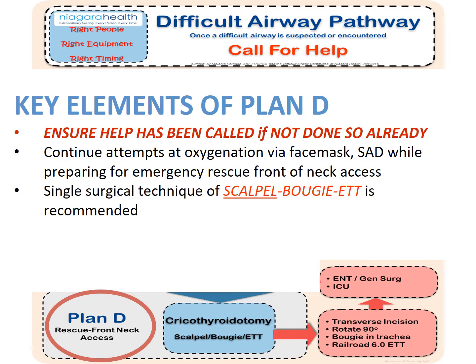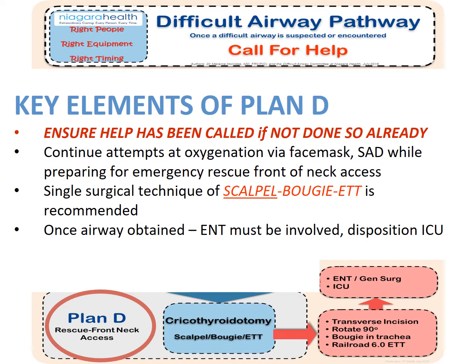We are going to use a scalpel, bougie, and endotracheal tube. Once we have that endotracheal tube in place, we're going to get ENT involved because they're going to need to follow this patient with respect to converting over to a traditional tracheostomy tube, and of course this patient is going to need to go to the ICU.